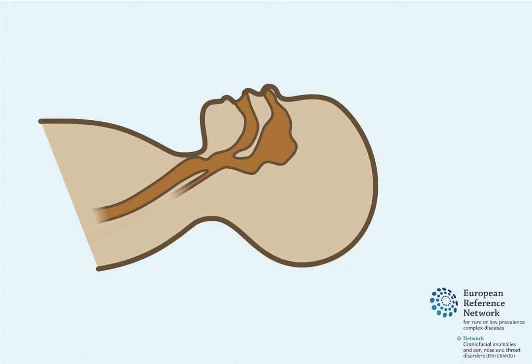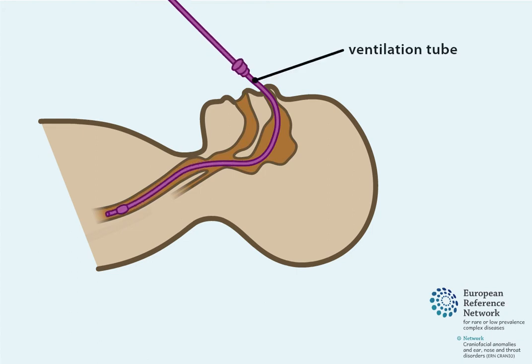First, a ventilation tube is inserted, so that the child can be supported to breathe during the surgery.